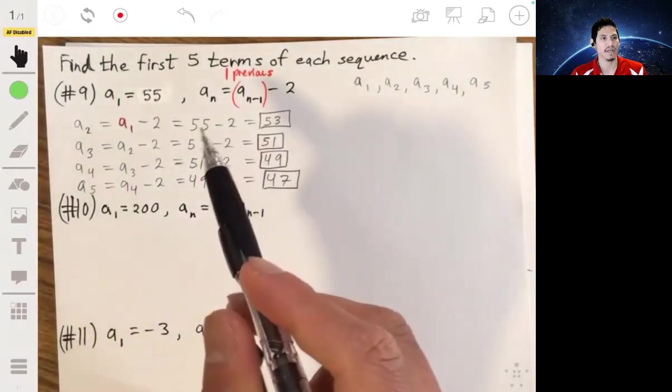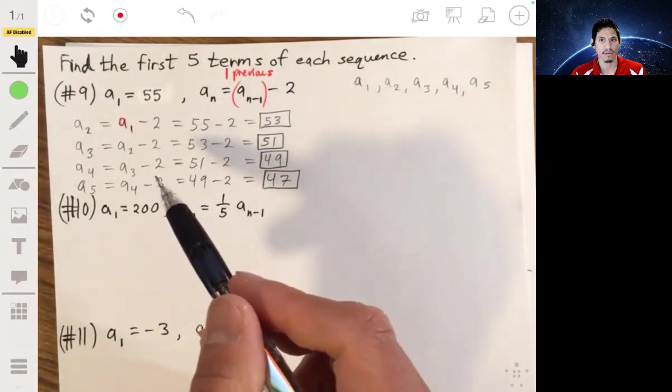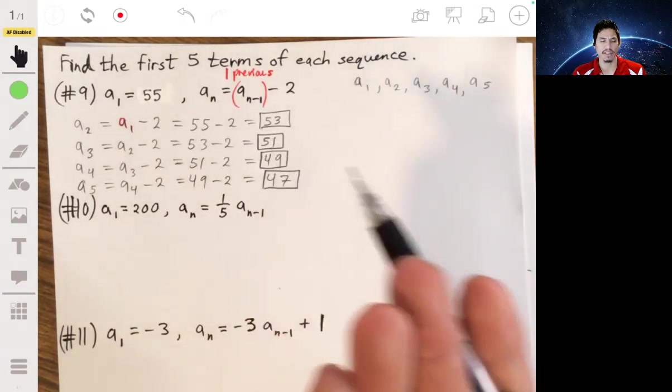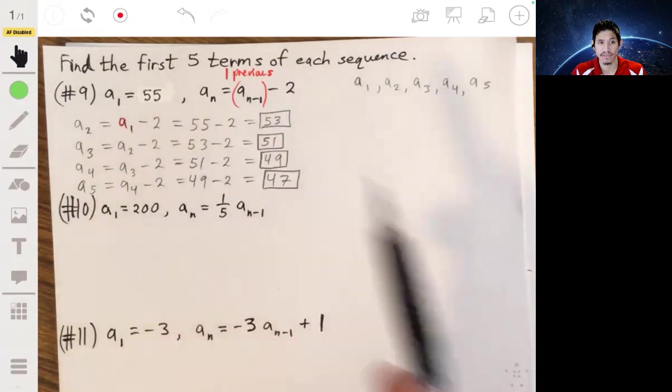So the key is to read the notation properly. Otherwise, you'll be confused, and this will seem a lot harder than it actually is. But once you understand this notation, it's actually very simple.